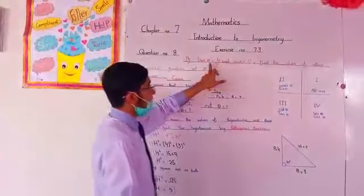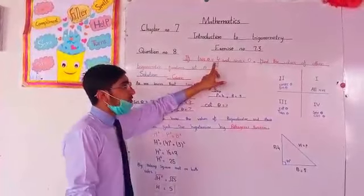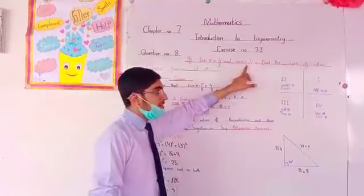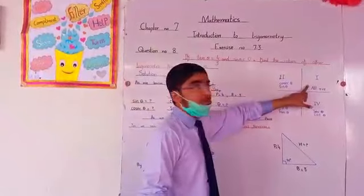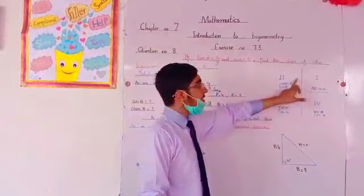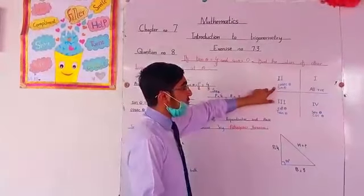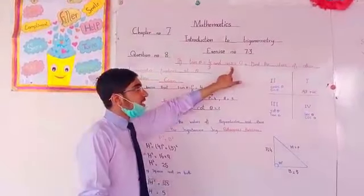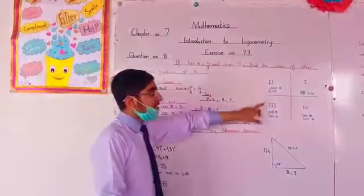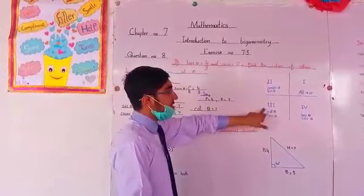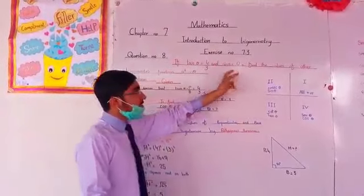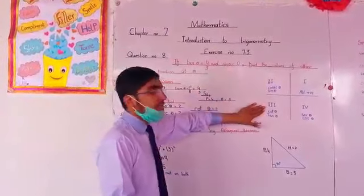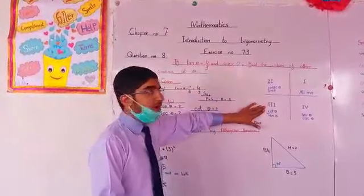Now we will see that tan theta is positive and sin theta is negative — in which quadrant does it lie? In the first quadrant, all numbers are positive. In the second quadrant, cosine is positive and sin is positive. But we need sin theta to be negative. In the third quadrant, tan theta is positive and sin theta is negative. So this means 4 over 3, tan theta — our answer lies in the third quadrant.